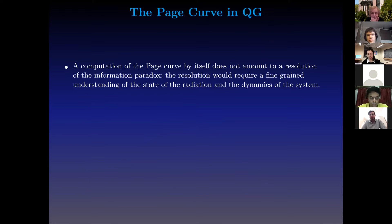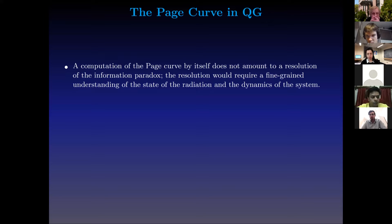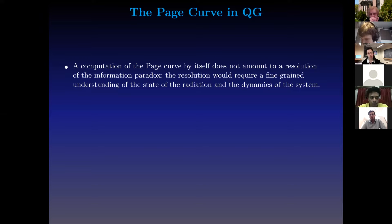I should say a disclaimer: a computation of the Page curve on its own does not amount to a resolution of the information paradox. It is a very useful tool, but entropy is a coarse-grained quantity and doesn't actually tell us exactly what the state is doing. A complete resolution of the black hole information paradox would require a fine-grained understanding of the state of the radiation and the dynamics of the system — in order to actually look at the Hawking radiation and say whether it is pure or mixed, we need to know more than just the Page curve.